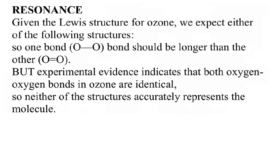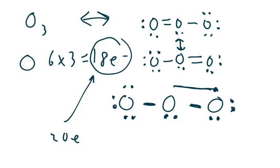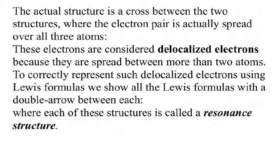However, experiments that have been performed have shown that the two oxygen bonds are identical. You would have expected one side to be longer — the single bonded side — compared to the double bonded side, which should have been shorter. But that's not what we see. What is happening? Why is it that both sides are equal? The concept is that the second pair of bonds — the ones that form the double bond — they don't really belong to either side. Those electrons are considered what we call delocalized electrons. Delocalized means that they are spread between more than two atoms, and they can move back and forth.